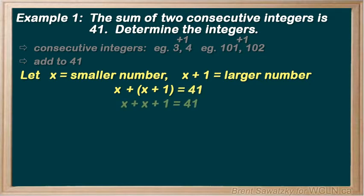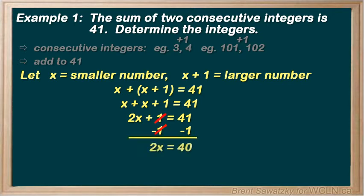And it's time to solve. We can bring the x's together. 2x plus 1 equals 41. And we're on to isolating that variable, x. We'll subtract 1 from both sides, keeping it balanced. 2x equals 40. We're multiplying by 2, so let's divide by 2. And we have x equals 20.